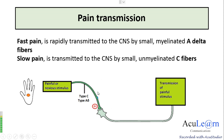The first order neuron synapses with the second order neuron at the dorsal horn of the spinal cord. The second order neuron crosses to the opposite side and ascends higher up to reach the somatosensory cortex via the thalamus.